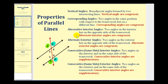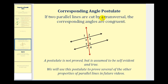Now we're going to prove many of these in the next several videos. But in order to prove these, we have to first state the corresponding angle postulate. A postulate is not proved, but it is assumed to be true because it is self-evident. So we're going to use this postulate in the next several videos to prove many of the relationships we previously stated. The corresponding angle postulate states that if two parallel lines are cut by a transversal, the corresponding angles are congruent. So we accept this to be true without a proof.